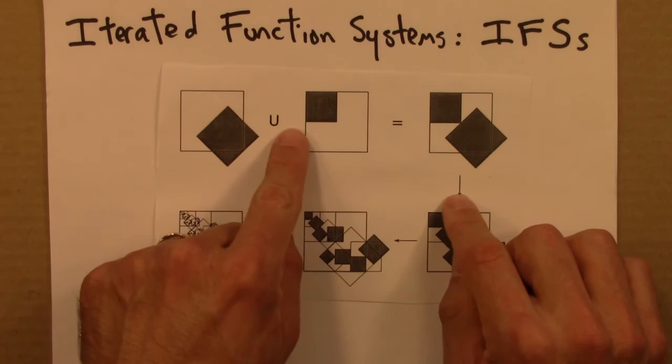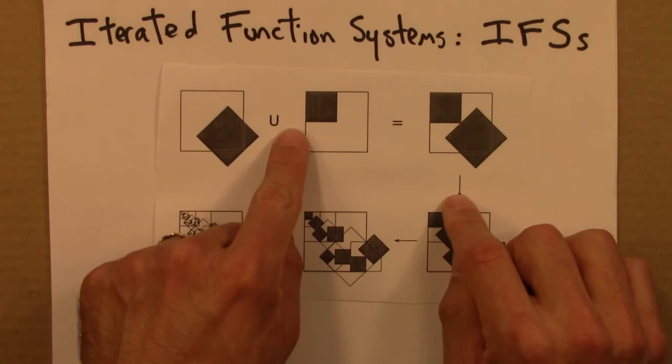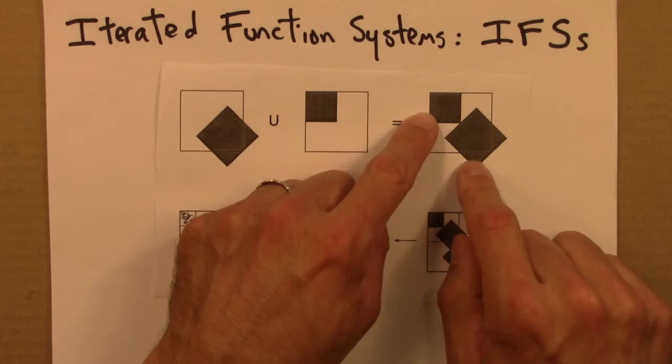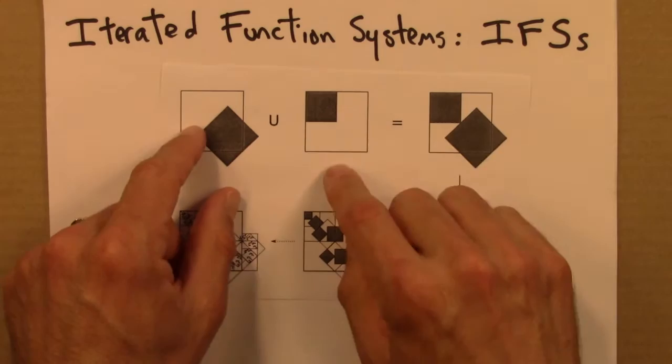We add them together. So this U is a union function thinking of this in terms of sets. We start with a square, and then we do these two transformations, combine them to get this shape. That's our function. Again, it would be described with a couple of matrices that do this rotation and this shrinking and translation. Then we would take that shape and repeat.